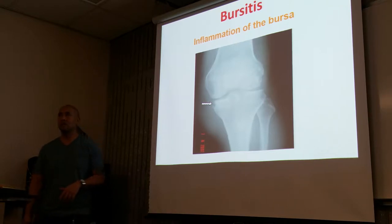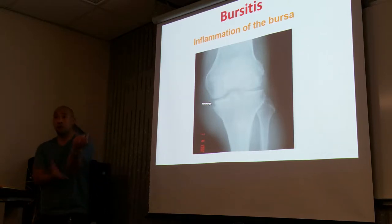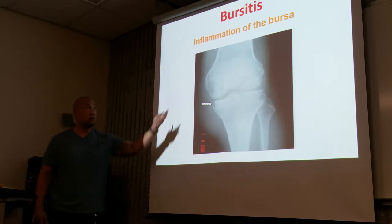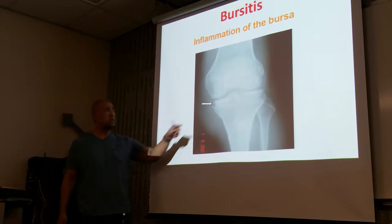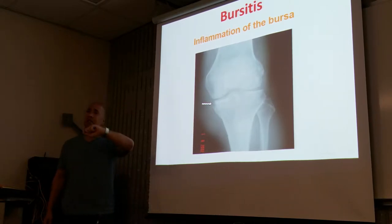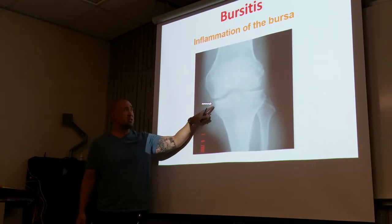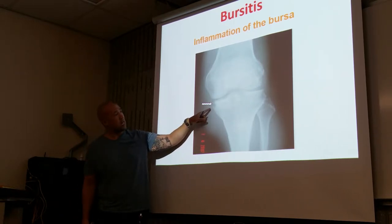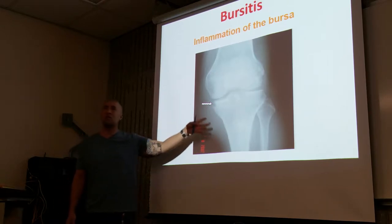What's a bursa? Where do we find bursas? In the knee. So we're talking about synovial joint areas like the knee, the shoulder, the elbow, the wrist — anything where there's a synovial joint. This is basically an inflammation of the bursa. What we show here is just a change in the density of the bone, but bursitis you wouldn't really see under x-ray.